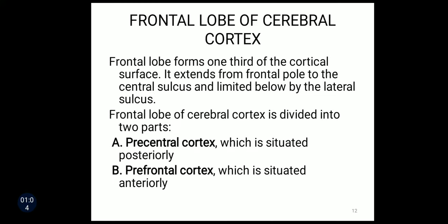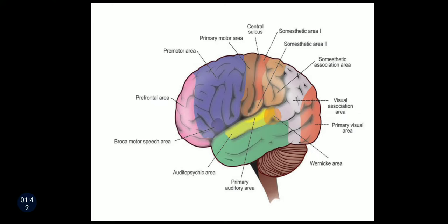These areas are also classified according to the lobes. Today in this class we are going to study about the various areas in the frontal lobe of cerebral cortex. This frontal lobe forms one third of the cortical surface. It extends from the frontal pole to the central sulcus and is limited below by the lateral sulcus. The frontal lobe of cerebral cortex is divided into two parts: the precentral cortex, situated posteriorly, and the prefrontal cortex, situated anteriorly.